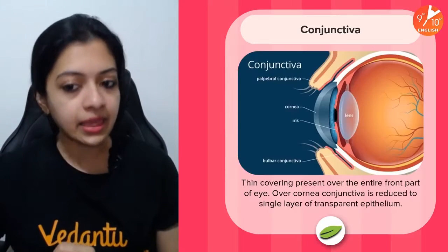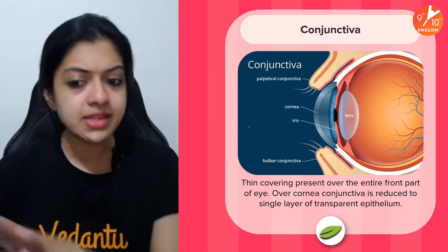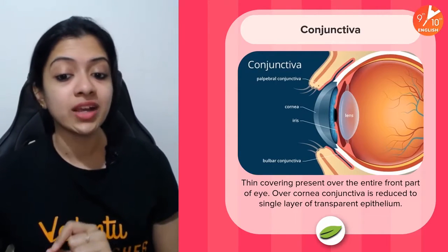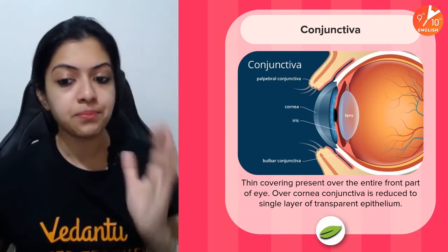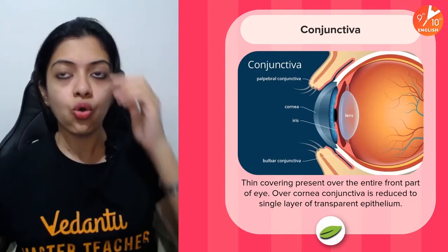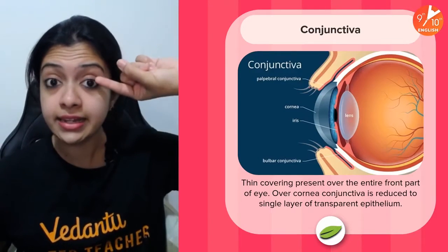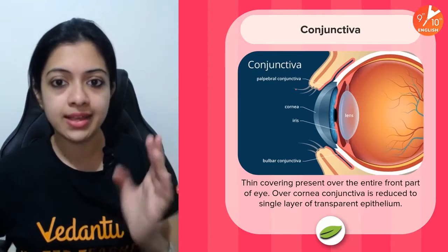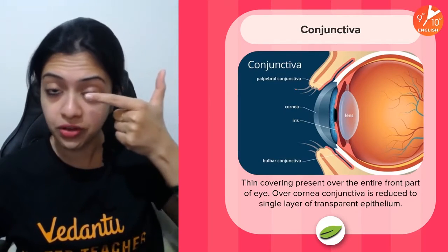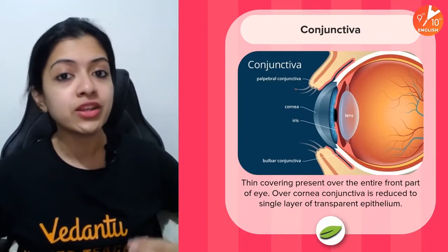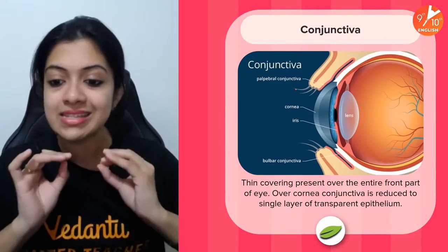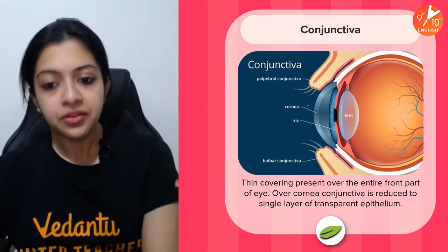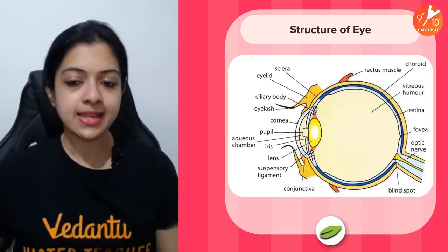This is what your eye looks like from a side view — the structure of the eyeball. The conjunctiva is the outermost thin covering present over the entire front part of your eye. If you fold up your eyelid slightly, you would see a red portion — that is the conjunctiva. Over the cornea, it is reduced to a thin transparent layer. The conjunctiva is the outermost covering of the eye.